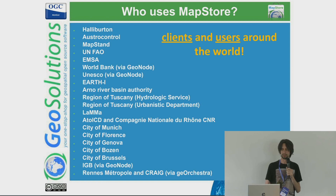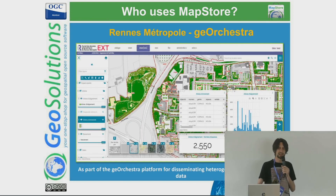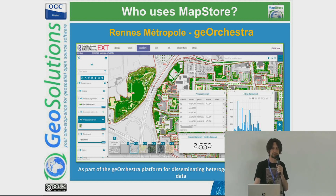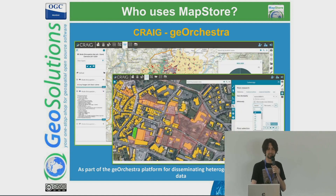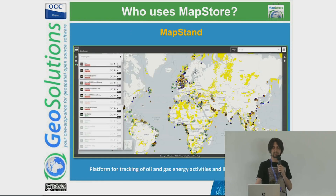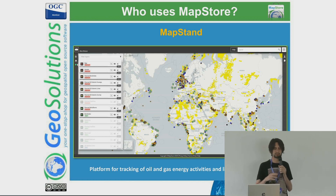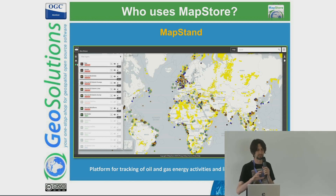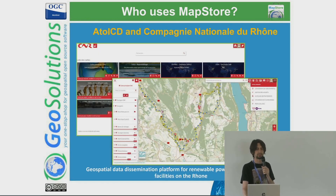Here are some clients using MapStore and also contributing to improving the functionality we are showing today. Some clients use heterogeneous source data for map visualization. We also worked with MapStand to create a customized interface focused on tracking oil and gas, interacting with different APIs. Companies like ENEL CD, focused on hydroelectric energy, use MapStore to visualize technical data.